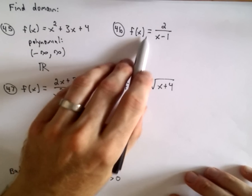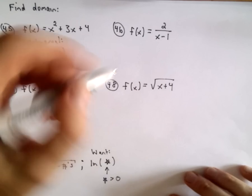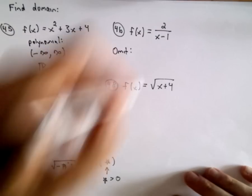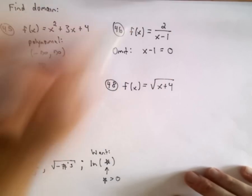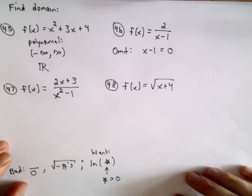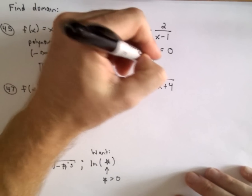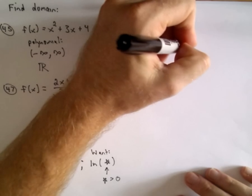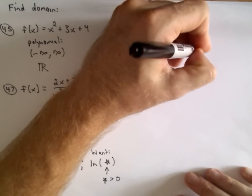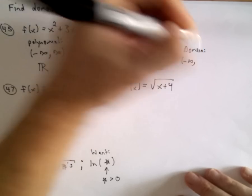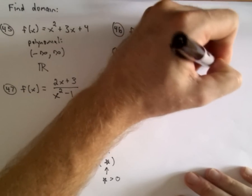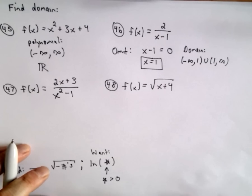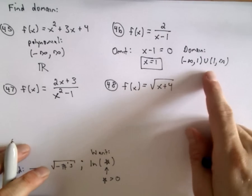Okay, 46. I've got f of x equals 2 over x minus 1. Well again, the value that we want to omit is the value of x that makes the denominator equal to 0. So I just make the equation x minus 1 equals 0. That's going to give me x equals 1, that's the value I have to leave out. So in this case, my domain would just be from negative infinity up to 1 union 1 to positive infinity, using parentheses to indicate that we skip over that value of 1, we don't use it.